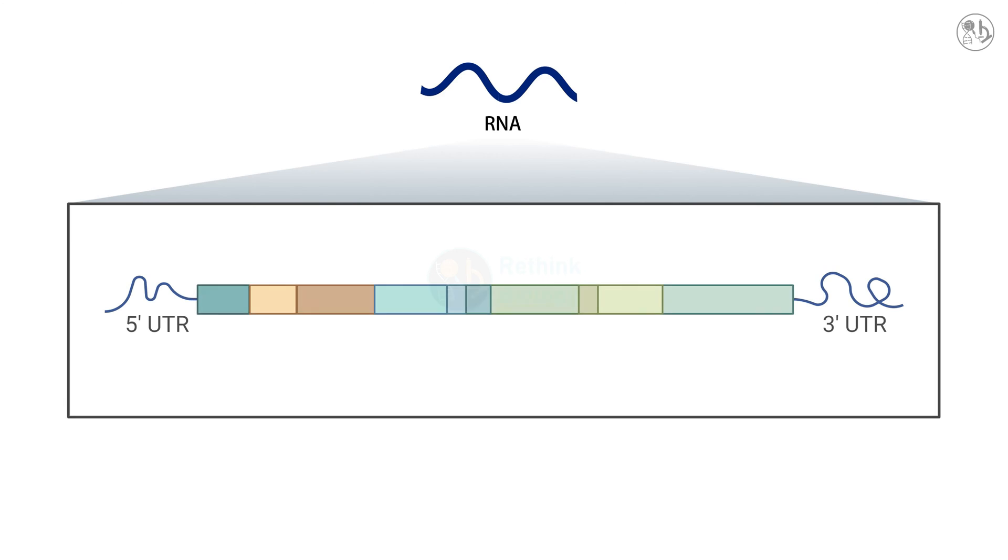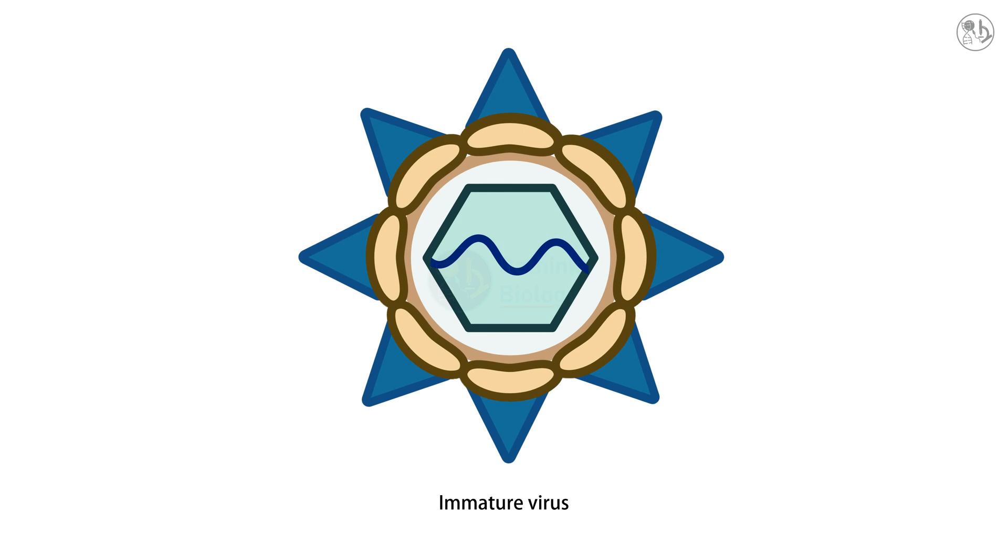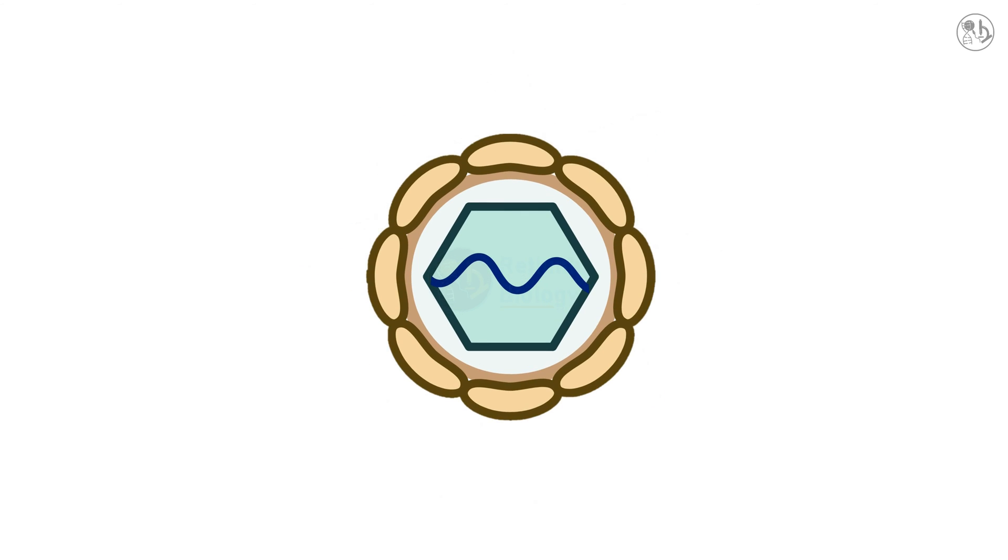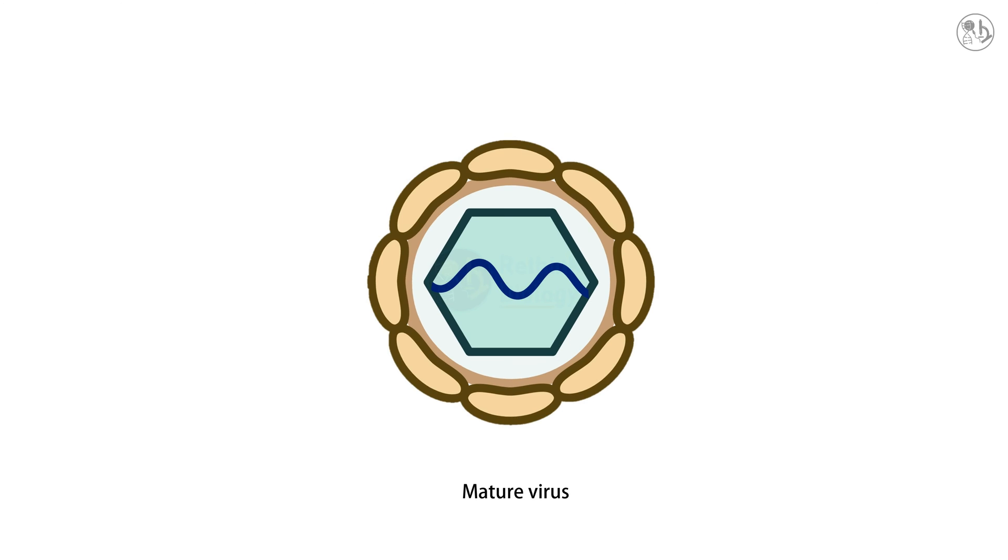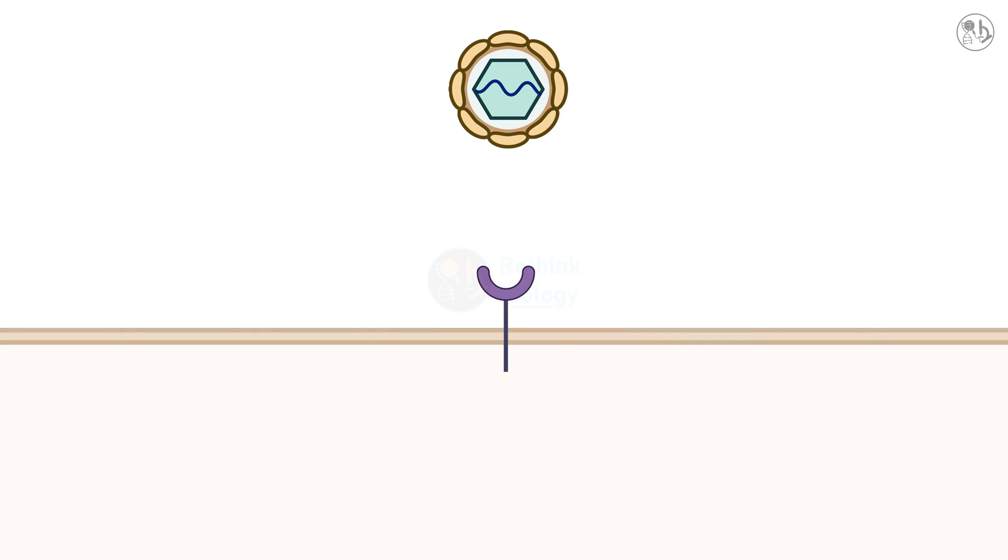The RNA encodes three structural proteins C, M, and E, and seven non-structural proteins NS1, NS2A, NS2B, NS3, NS4A, NS4B, and NS5. The fully mature dengue virus don't have prM proteins on their surface.